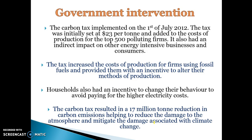The government implemented a carbon tax on the 1st of July 2012, initially set at $23 per tonne, placed on the top 500 polluting firms. Those firms often passed that cost on to their consumers, which affected many other consumers and businesses. The tax increased the cost of production for firms using fossil fuels and provided them with an incentive to alter their production methods.